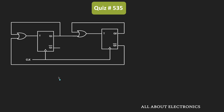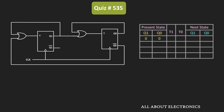Initially, let us assume that the value of Q1 and Q0 is equal to 0. At that time, Q0-bar will be equal to 1, and the same 1 will also appear over here. This 0 will also appear over here. The output of this OR gate is equal to 1, so for the next clock pulse, the input to the T flip-flop is equal to 1 — that means T1 is equal to 1.